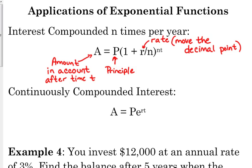N is the number of times per year. And T is the number of years.